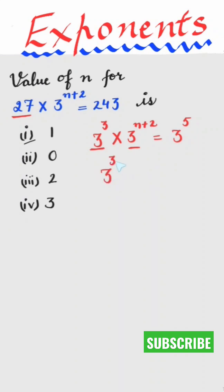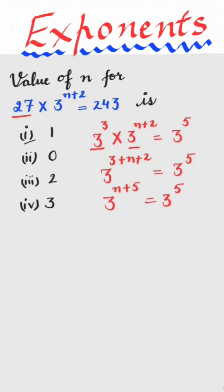raised to power 3 plus n plus 2 is equal to 3 raised to power 5. 3 raised to power n plus 5 is equal to 3 raised to power 5. Bases are same, so we can equate the powers.